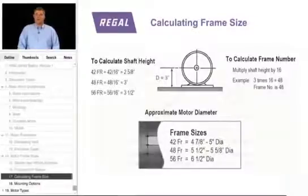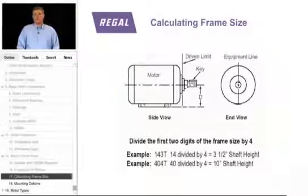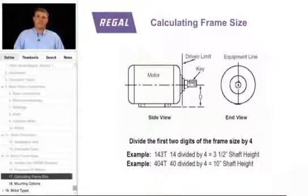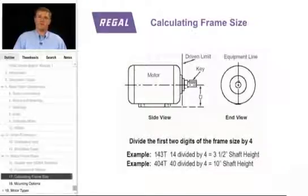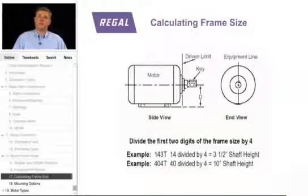On the larger NEMA T frame motors, 143 T and larger, these motors also tell us center of shaft but no longer in 16ths of an inch. It's the first two digits of the frame size divided by 4. So a 143 T frame motor — 14 divided by 4 — is 3 and a half inches. So we can determine the center of shaft by using that frame size.